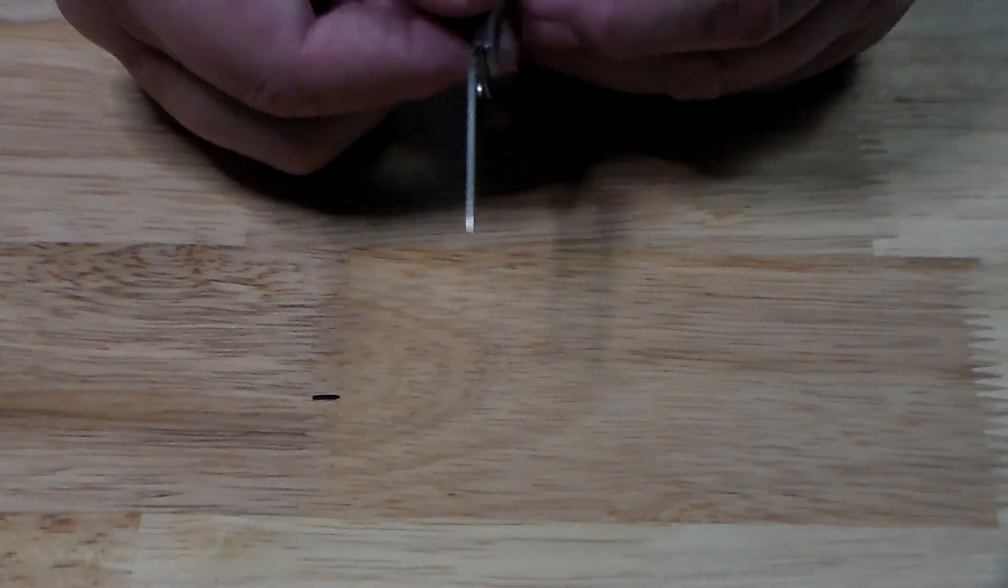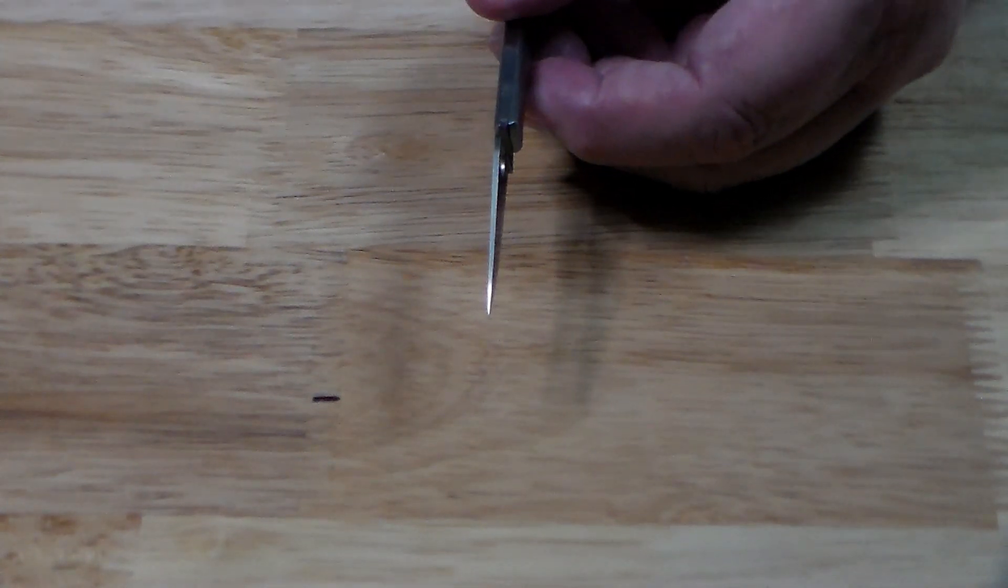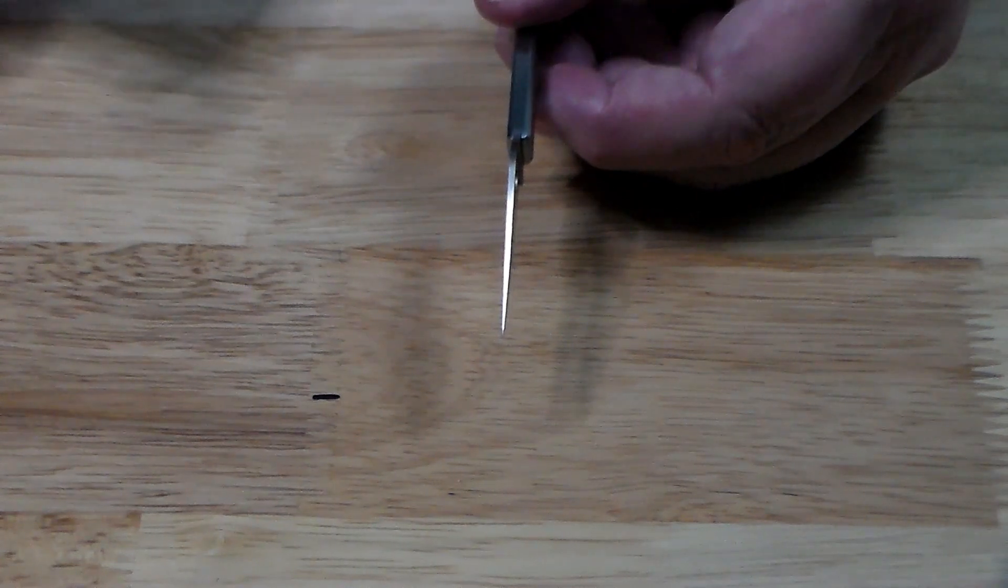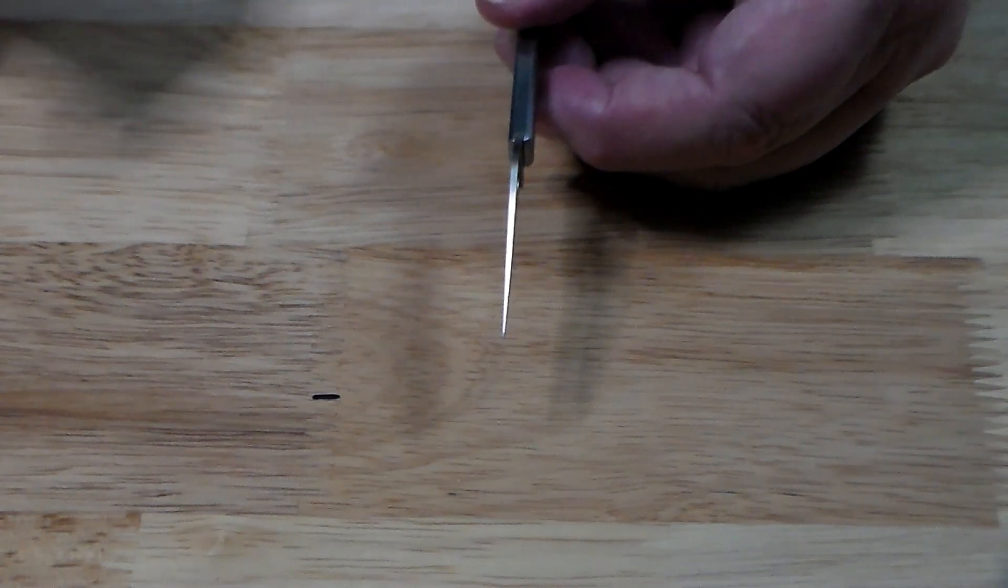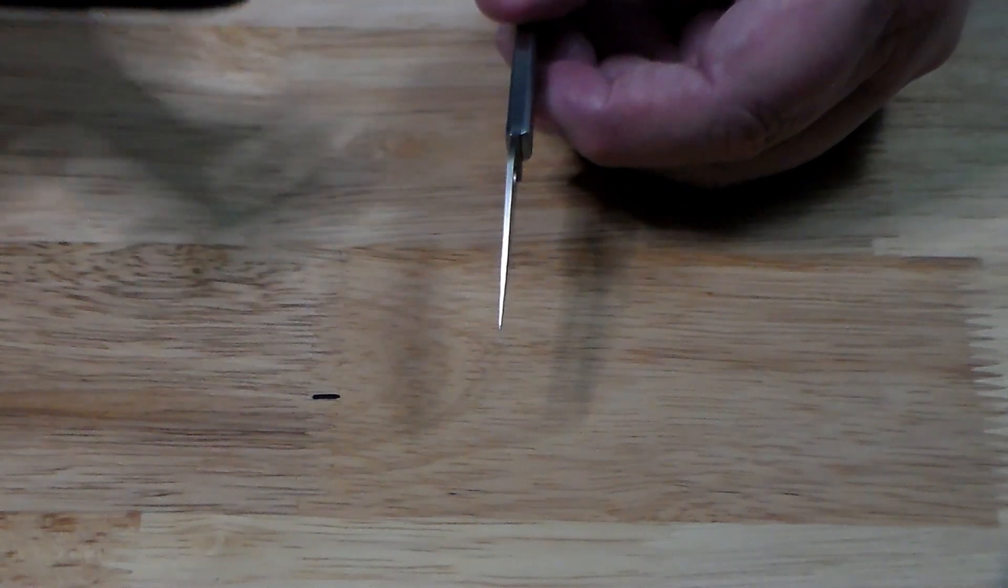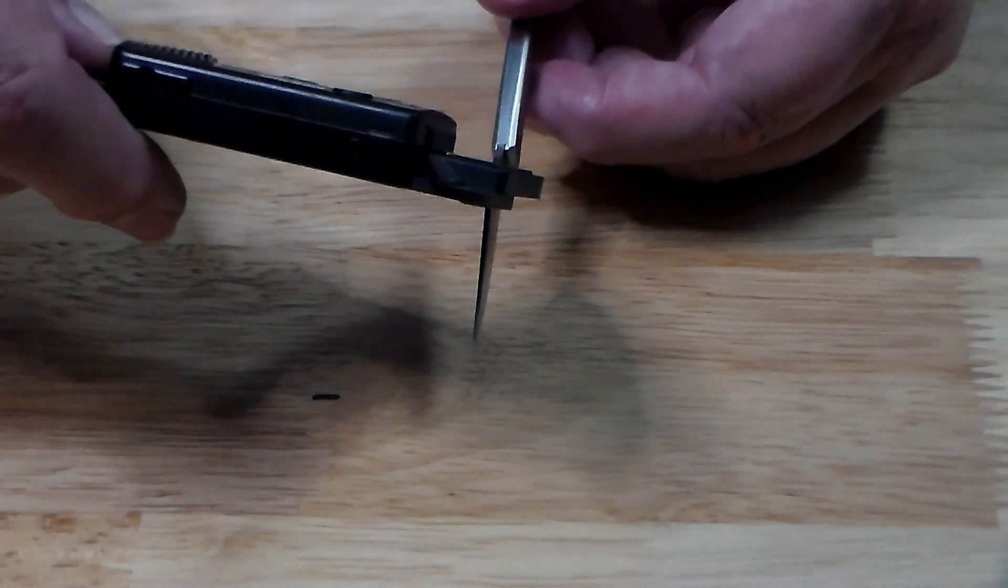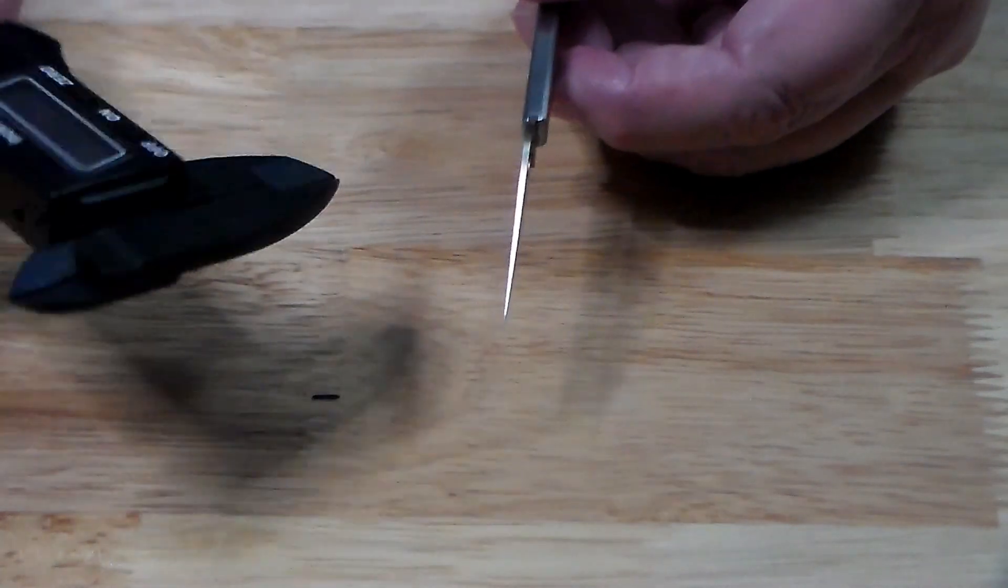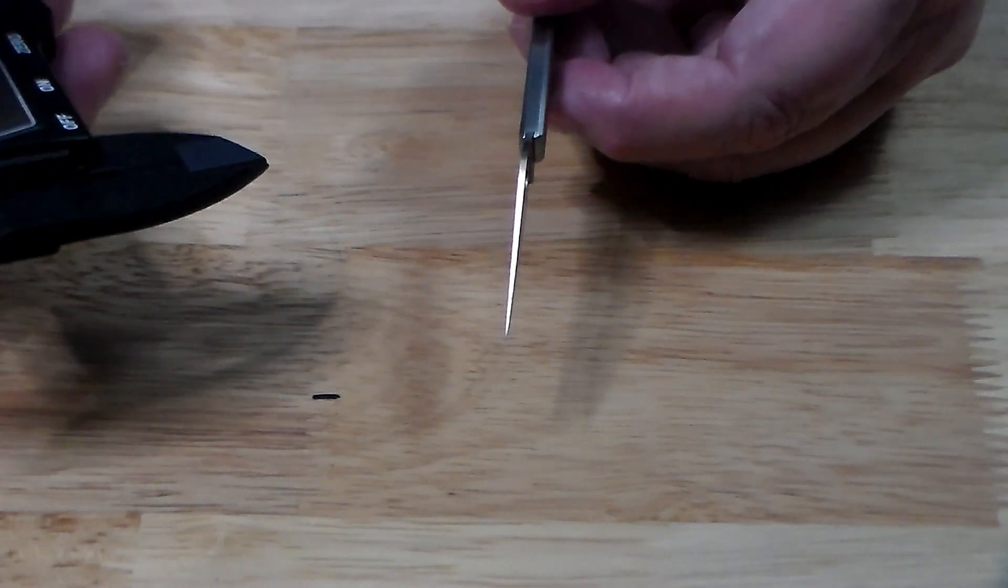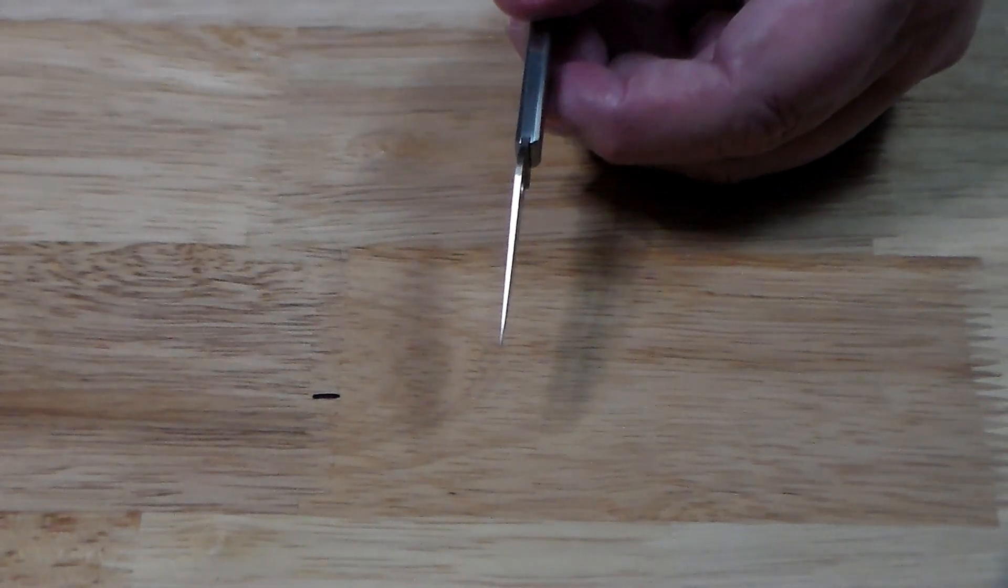The blade thickness is point seven inches, I think that may be wrong, let me check that. Do believe that is wrong. Blade thickness is 0.04 inches and that is 1.1 millimeters.